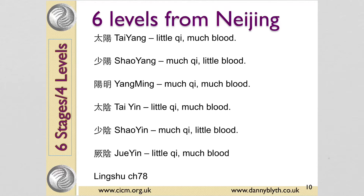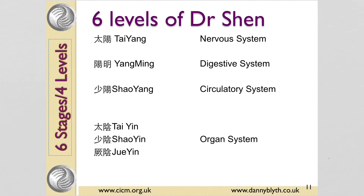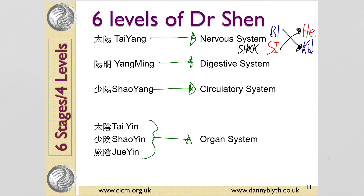The Ling Shu also discusses how much Qi and blood are in each of the channels, and this can be important in treatment. For example, the Yang Ming are full of Qi and blood — important for stroke and atrophy. These channel pairings are also important for understanding some point functions, like triple burner points for liver yang rising headaches, and for choosing points for treating channel problems. Dr. Shen also equated Tai Yang to the nervous system, Yang Ming to the digestive system, Shao Yin to the circulatory system, and the others to the organ system. Which is interesting if you think of shock affecting the exterior of the nervous system — bladder and small intestine — and upsetting the heart and kidney Qi. And this strange pairing of the gallbladder and the triple burner — the extraordinary Fu, the organ that doesn't have a form and that controls the Yuan Qi.